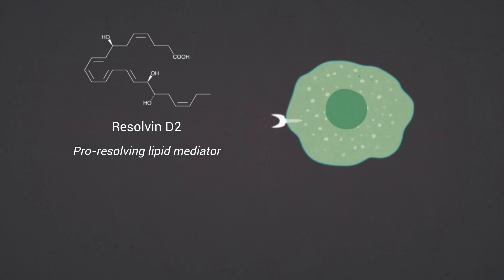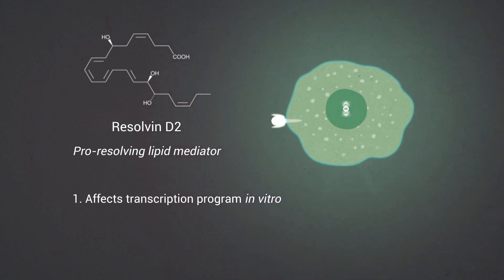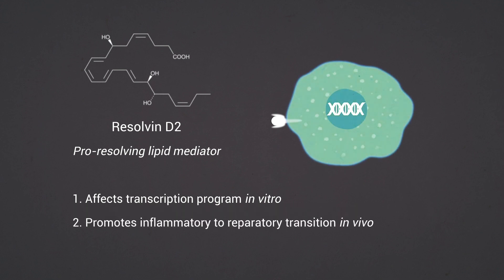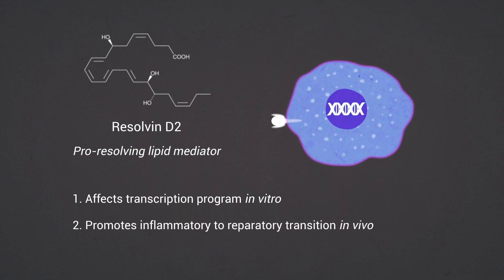These time-dependent profiles were recapitulated in sorted neutrophils and muscle-infiltrating macrophages, with a distinct pro-resolving signature observed in reparative macrophages. Focusing on Resolvin D2, a specialized pro-resolving lipid mediator, we showed that it affects the transcription program of naive macrophages in vitro, equipping them with a unique gene signature.